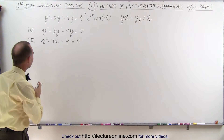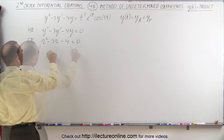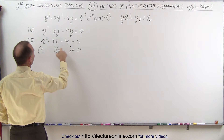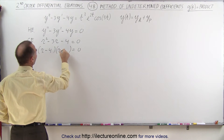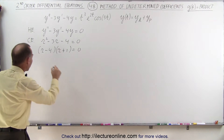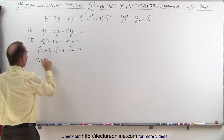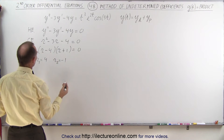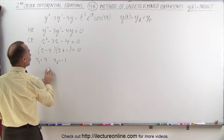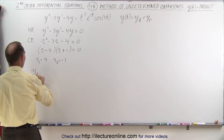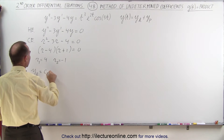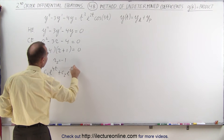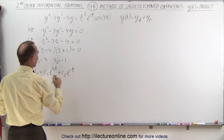And hopefully we can factor it out. We have r minus 4 and r plus 1, which will work. So that means the two roots are r1 equals positive 4 and r2 equals negative 1, which means that the homogeneous solution, y sub h, is going to be equal to c1 e to the 4t plus c2 e to the minus t.